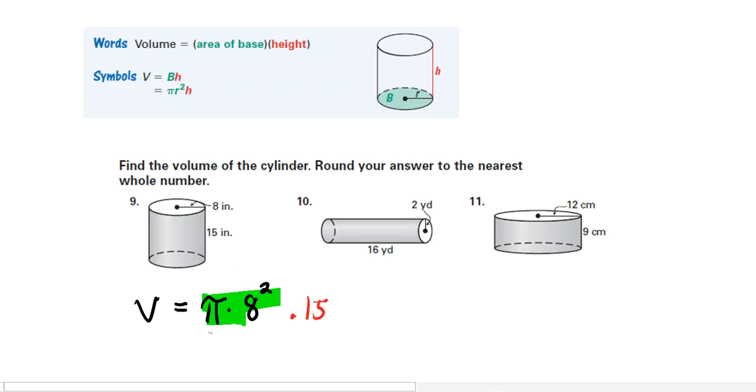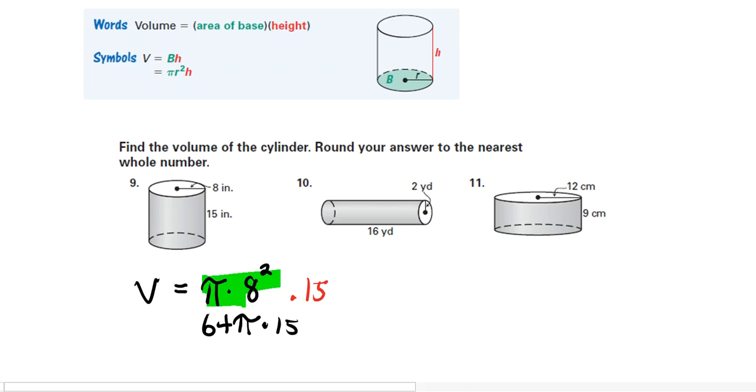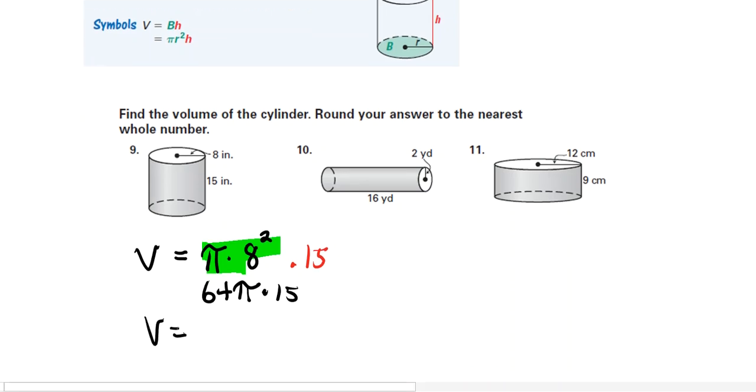So I'll say 8 squared is 64, so we have 64π times 15. And now I go to the calculator. 64π times 15. And that's equal to 3,015.9. So rounded to the nearest whole number, our volume is 3,016 inches cubed. You can try the others, but I think that's all we need to try for now.